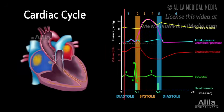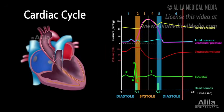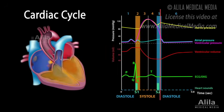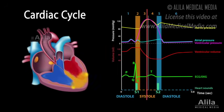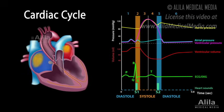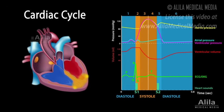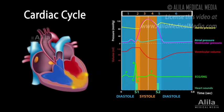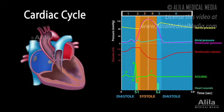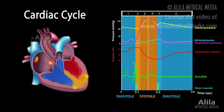The cardiac cycle refers to the sequence of events that occur and repeat with every heartbeat. It can be divided into two major phases, systole and diastole, each of which subdivides into several smaller phases. Systole and diastole, when not specified otherwise, refer to ventricular contraction and relaxation, respectively.